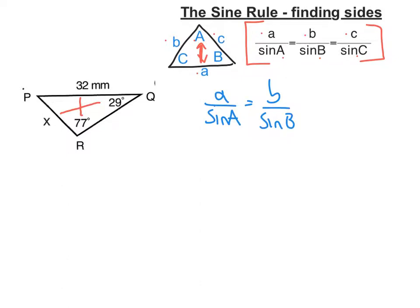Sub our values in. I'm going to call A this one here, the value I need to get. So A is X. Sine of big A, that's the angle opposite to the side, so that's 29, is equal to B, so this will be 32. And this is the angle opposite, so sine 77.